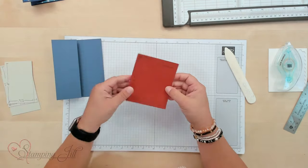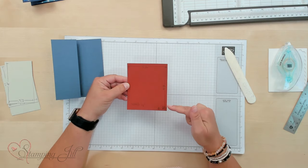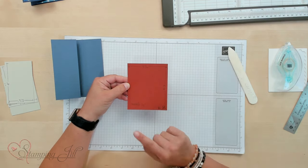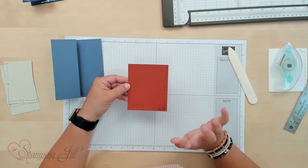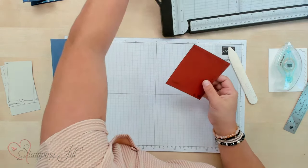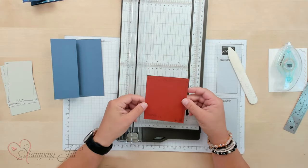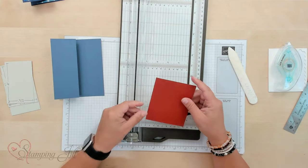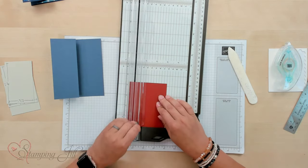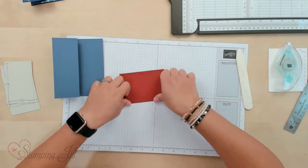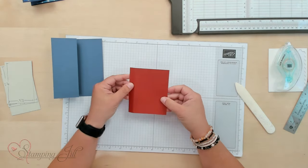Next we're going to use a piece of 3 1/2 by 4 1/4, and we're going to score this at 1 1/2 inch on the 3 1/2 inch side. So again, bring in our Stampin' Trimmer, and I'm going to flip it this way, and we're just going to score at 1 1/2 inch here, just like that. And we'll fold that crease, just like that.